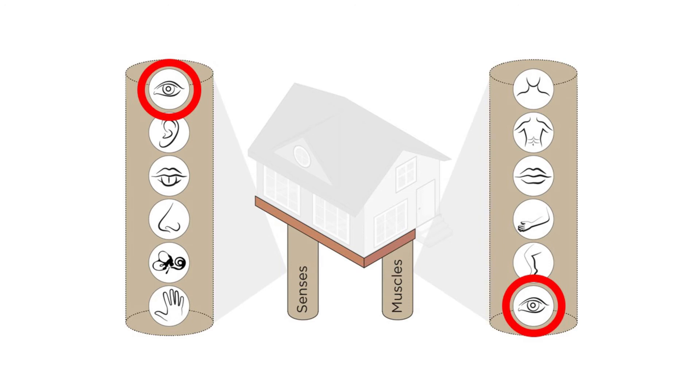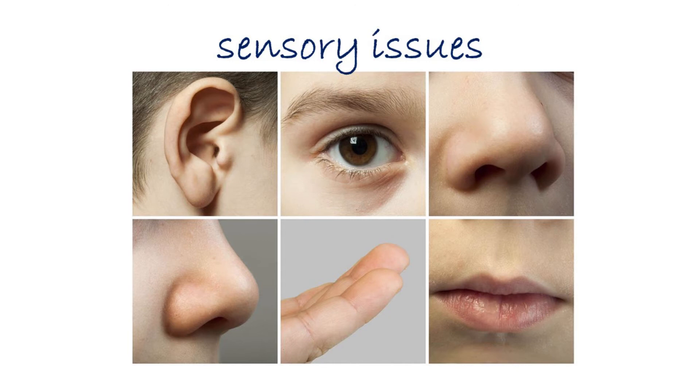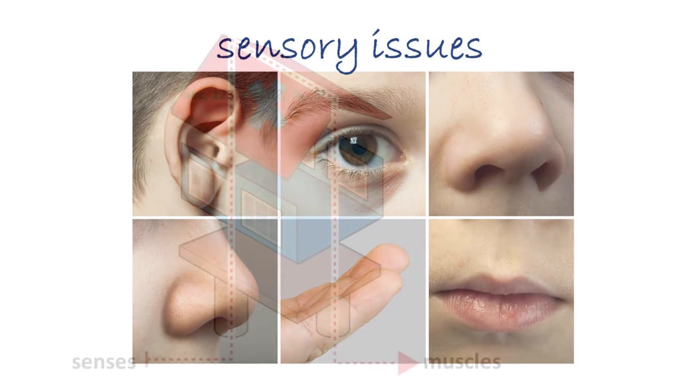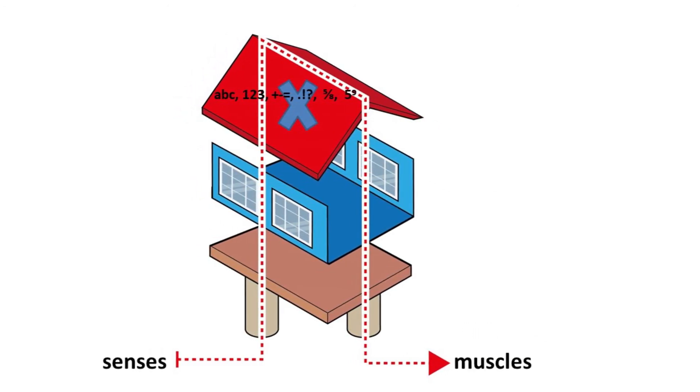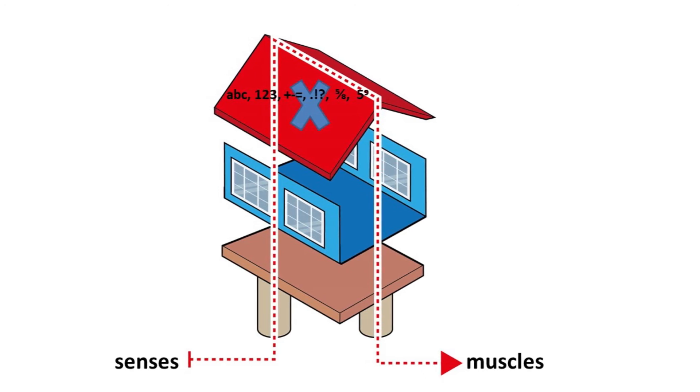So if a child has any sensory challenges, it would mess up the entire learning process, because step one, sensory input, is not working well. How on earth would it be easy for that child to develop well?